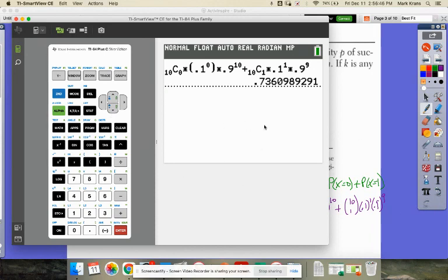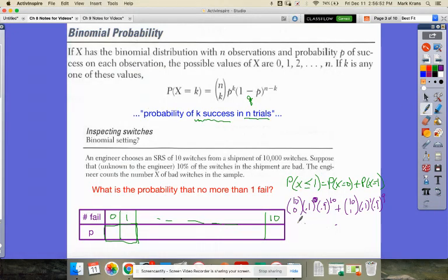If he did many, many, many trials of this, there's a three in there, 73.6% of the time, no more than one would fail and he would keep the shipment. And the other 26.4% of the time he would reject the shipment because too many of them failed. Cause all these guys had up to 26.4%. All right.